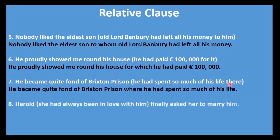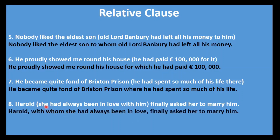Number eight: Harold — (she had always been in love with him) — finally asked her to marry him. Harold is male. In the bracket, 'him' refers to Harold and appears at the end with preposition 'with,' so 'with whom.' Answer: Harold, with whom she had always been in love, finally asked her to marry him. Number nine: Godfrey — (his parents had been in the theatre) — decided to become an actor himself. 'His' is the possessive form of Godfrey, so use 'whose.' Answer: Godfrey, whose parents had been in the theatre, decided to become an actor himself.